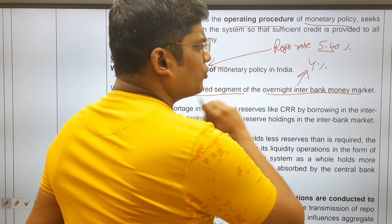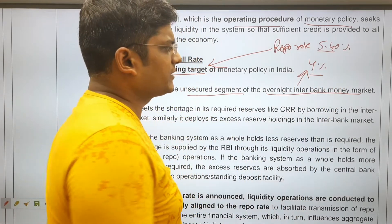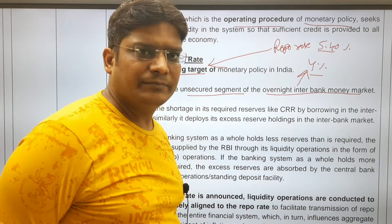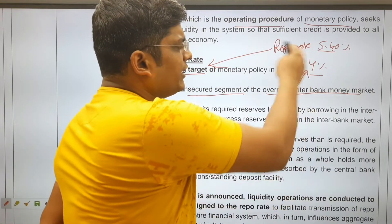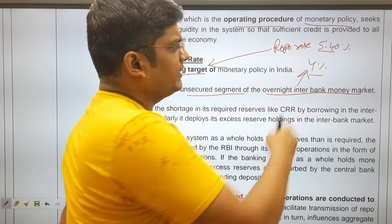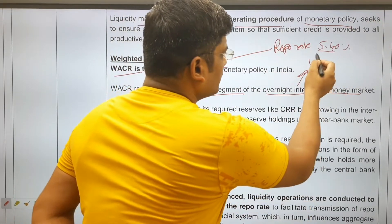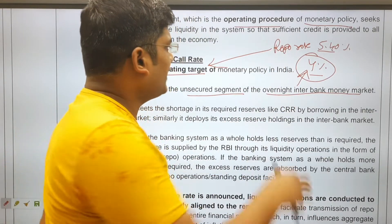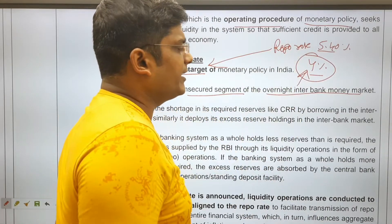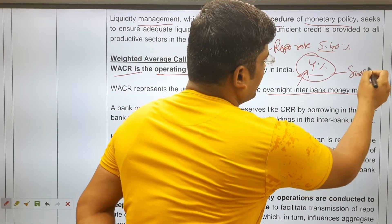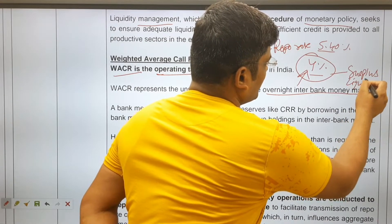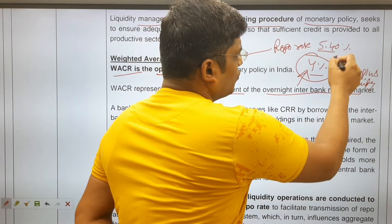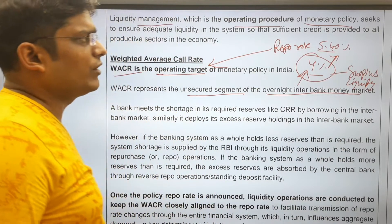Suppose the repo rate is 5.40% but the interbank money market rate is 4%. Banks will prefer borrowing from the interbank market rather than RBI. When the WACR is below the repo rate, it indicates banks have surplus liquidity. In that case, RBI will absorb the surplus liquidity and try to align the weighted average call rate with the repo rate.